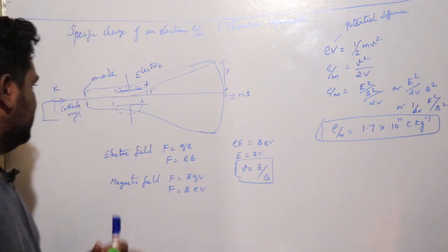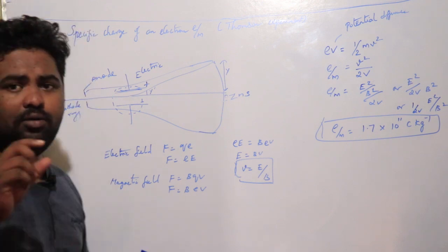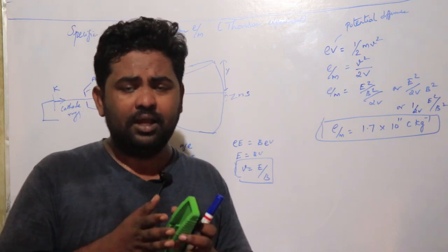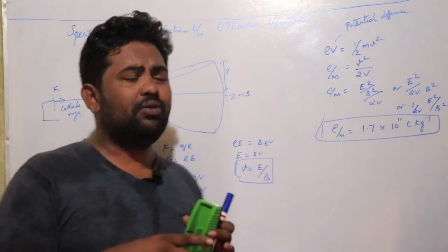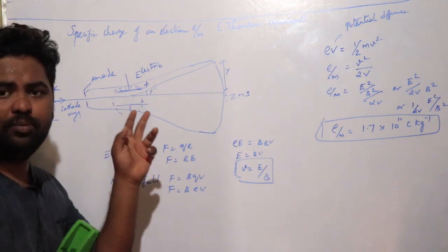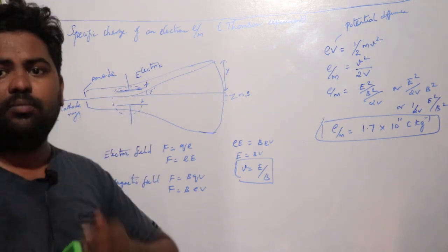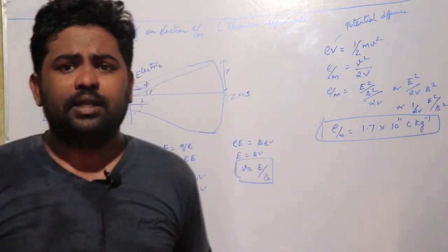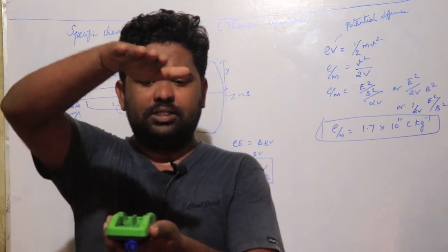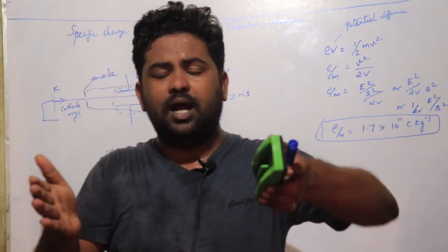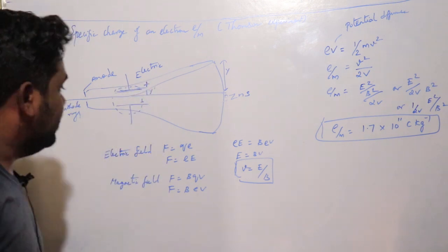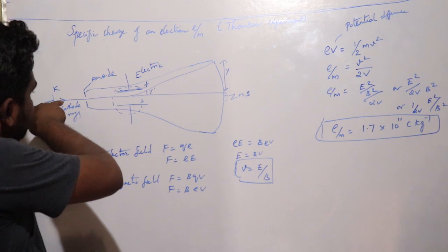There is an anode disc with a slit that produces a narrow pencil beam. There are two plates — one providing a magnetic field and one providing an electric field, creating a vertical field between them.